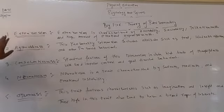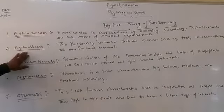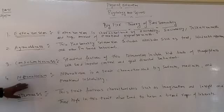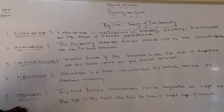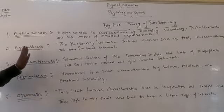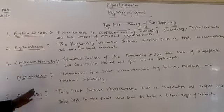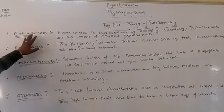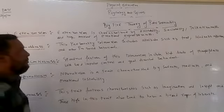Number one is extraversion, second is agreeableness, third is conscientiousness, fourth is neuroticism, and the last is openness. So one by one we are going through this particular Big Five Theory of Personality. First of all comes extraversion theory of personality.